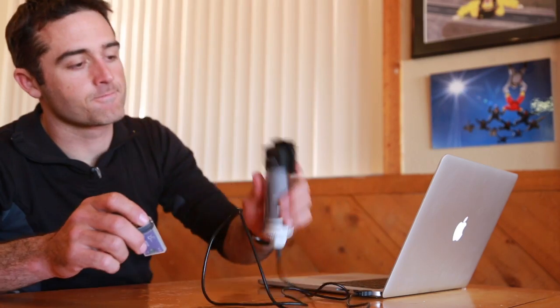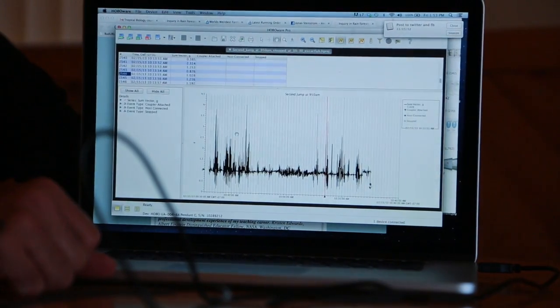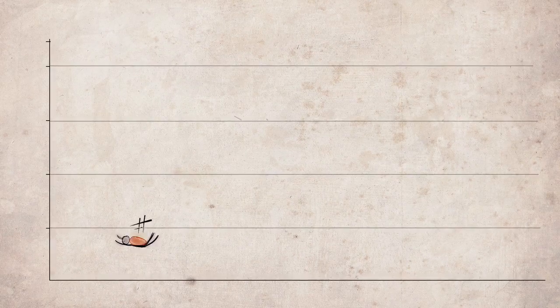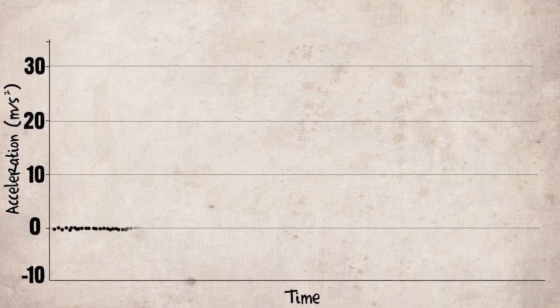This particular logger measures acceleration in three planes. I'm running it through a program to give us summative acceleration, and this is what it looks like. To the untrained eye, it's pretty messy. So I did seven more jumps, looked for the trends, and plotted them on my own new graph. Let's see what this shows us.